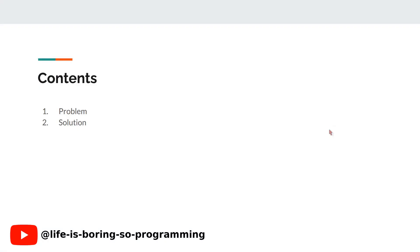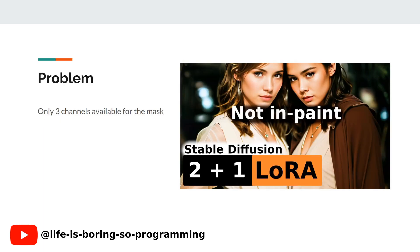We will first look at what the problem is, why we are making this video, and then find a solution. In the last video, we used three different LoRA models and masks in one image. If you have not watched that video, you can find the link here or in the description below. But why only three? Can we have four, five, or even more?